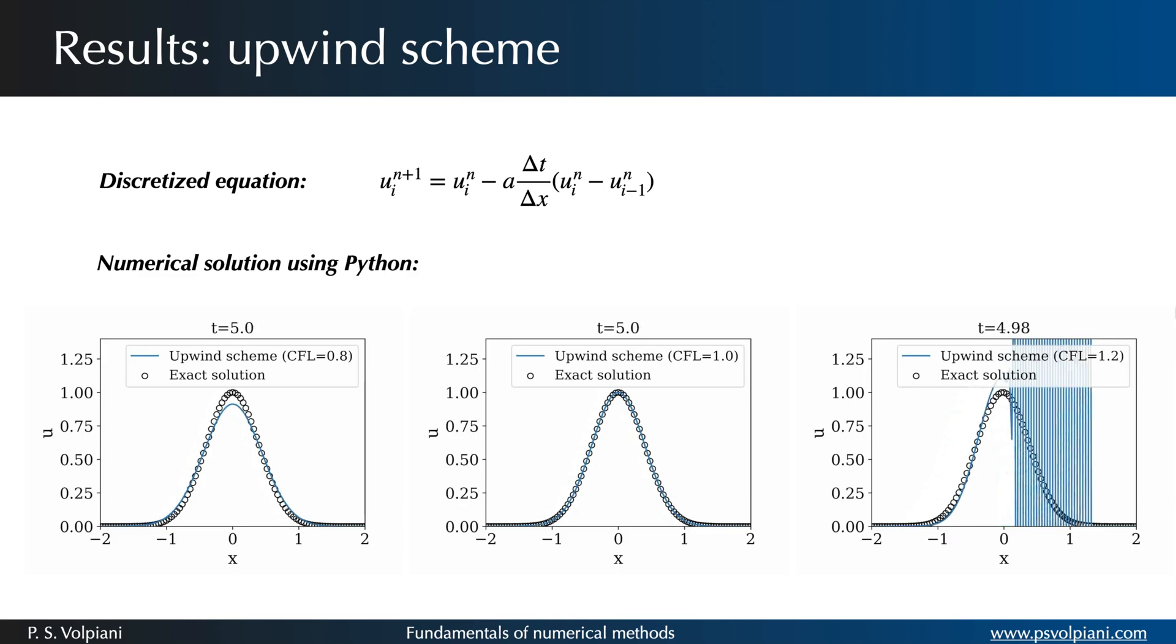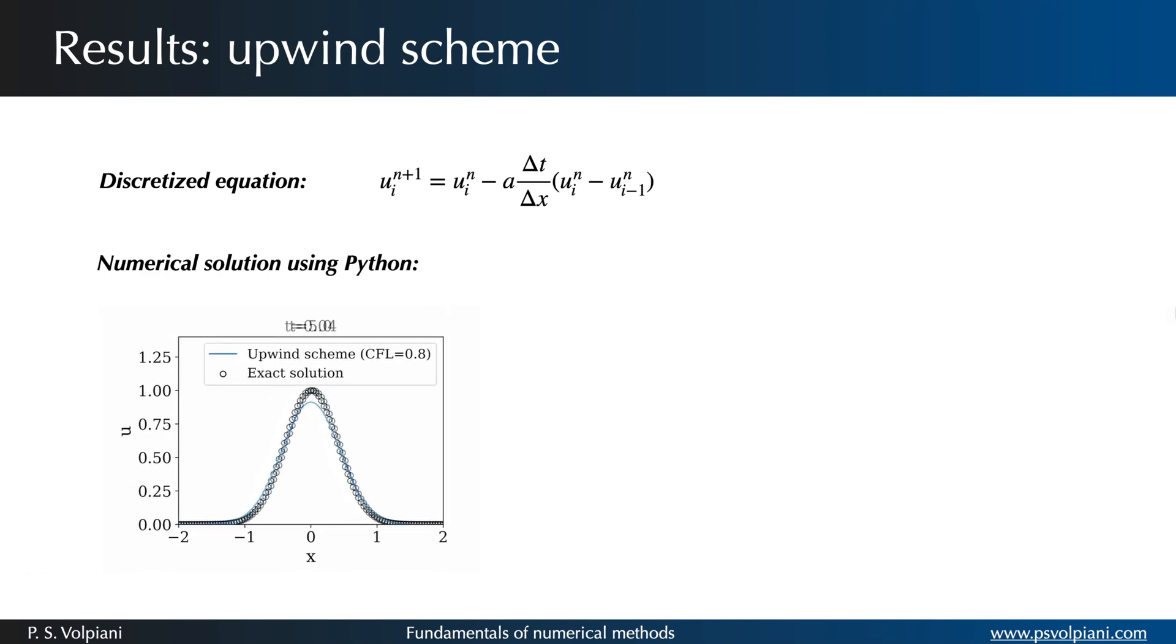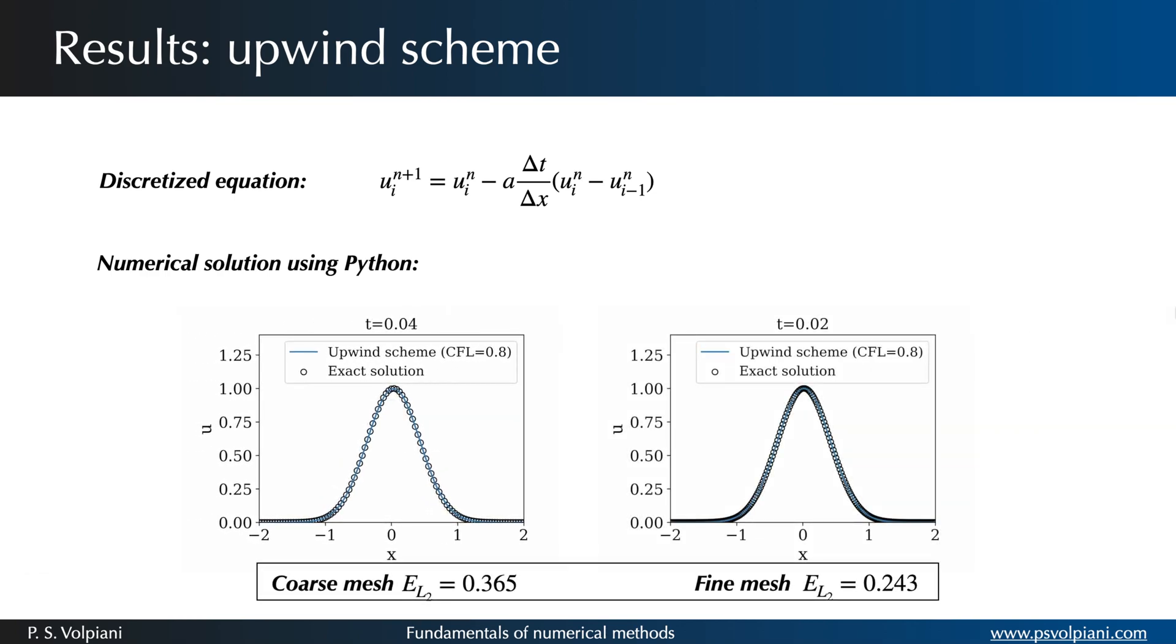In the case where CFL equals 1.2 the amplitude increases and the calculation diverges. Now let's refine the mesh keeping the CFL number equal to 0.8.